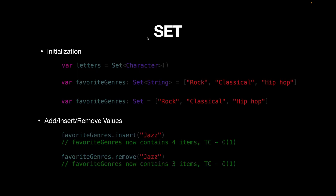That was it with Array. Let's look into Set. For initializing a Set, you use the Set keyword and then define the type — for example, Set<Character> or Set<String>. It is not always necessary to define the type explicitly; if all values are strings, Swift will infer that the set is of type String automatically.